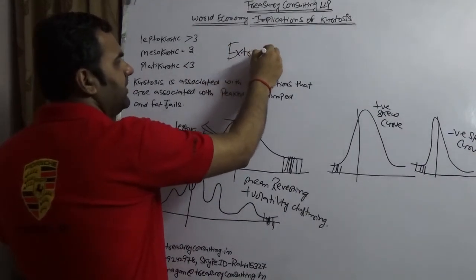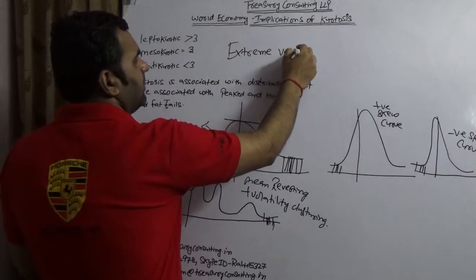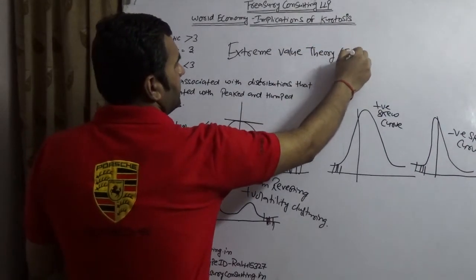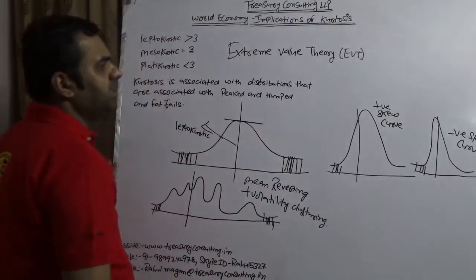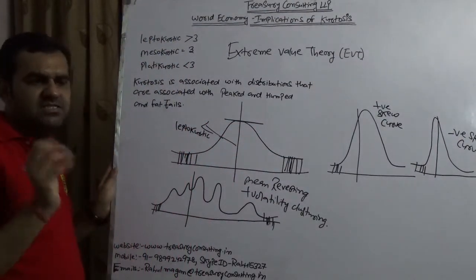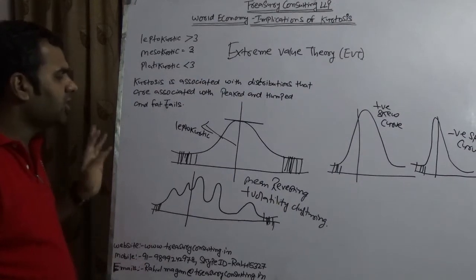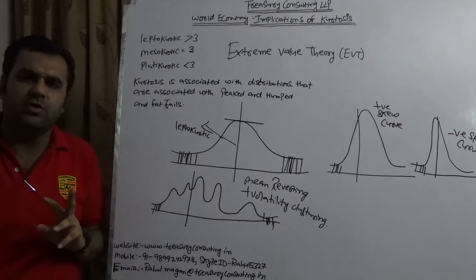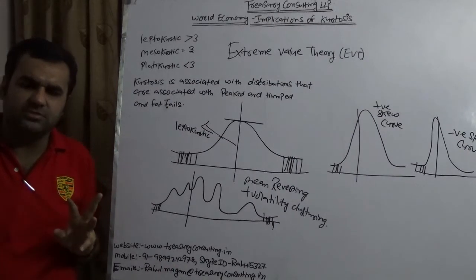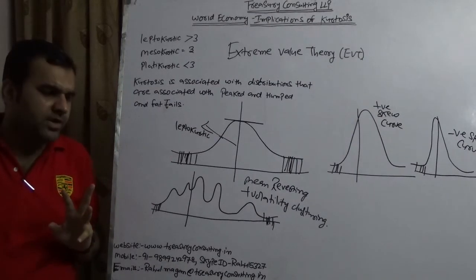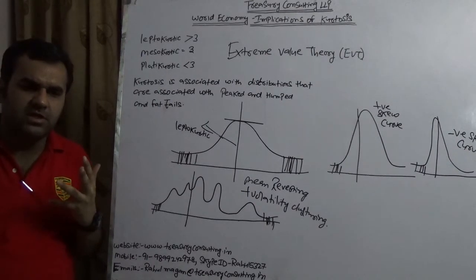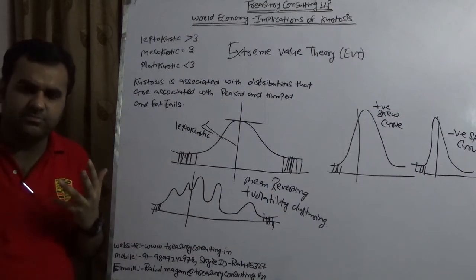So we need to understand that there is another thing coming up but unfortunately not very recognized. The school and the media are not talking about that, which is known as Extreme Value Theory (EVT). This extreme value theory is talking about the fat tails and leptokurtic distribution. In my personal opinion, the global economy is heading towards a leptokurtic distribution. There's no doubt about that. At the same time, we are heading towards a major crisis. That crisis is bound to happen.